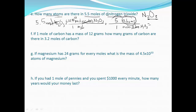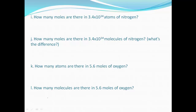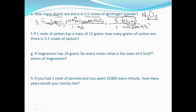This is the step that people usually forget in this problem. Doing the math: 5.5 times 6.02 times 10 to the 23rd times 5 gives us 1.65 times 10 to the 25th atoms.